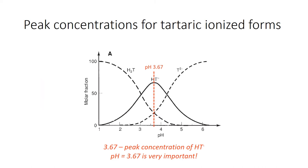Addressing the examiner's report comment about tartrate ion formation above pH 3.6: on a graph of molar fraction versus pH, there is a peak concentration of hydrogen bitartrate (HT⁻) at pH 3.6–3.7. This is important because depending on whether pH is above or below 3.6–3.7, the wine behaves differently during cold stabilization.